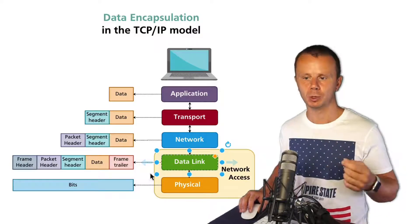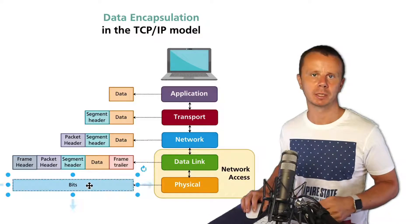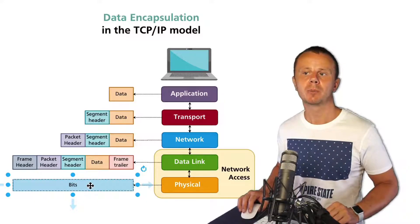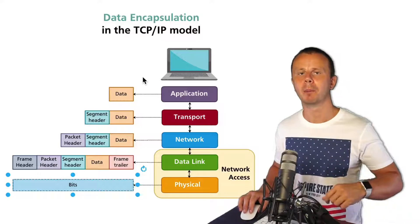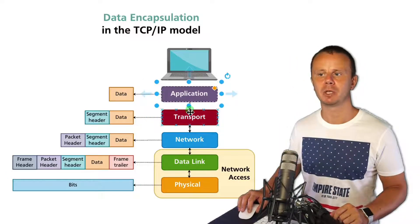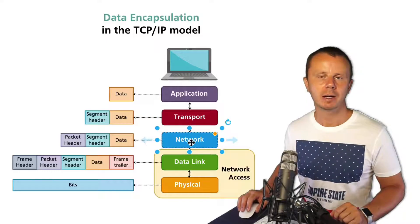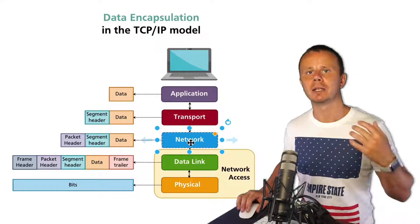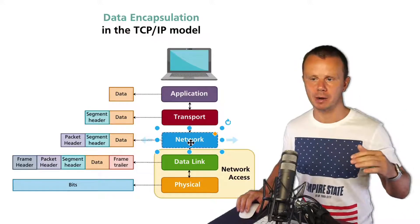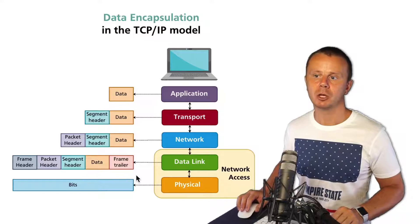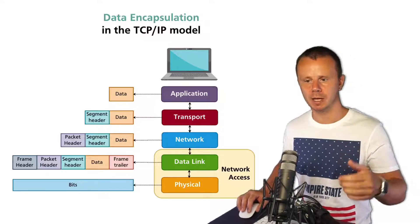The physical layer performs encoding and sends the encoded data over the physical media. This process is called encapsulation. The main idea is that layers are independent from each other, and each layer adds its own information to the existing information received from the upper layers.